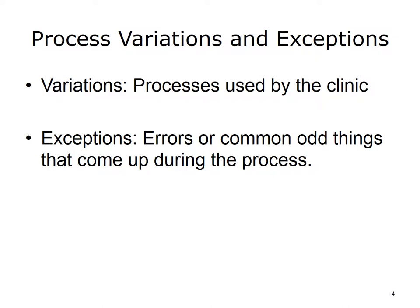Remember from Lecture A that process variations are processes used by the clinic, i.e., the way a particular clinic does something. They are called variations because they vary from clinic to clinic. There should be a process diagram for the variations used by the clinic. Remember also that process exceptions are errors or common odd things that occur during the clinic's processes. They are important to note because EHR functionality needs to cover expected exceptions and needs to have a generic way to handle the unexpected.